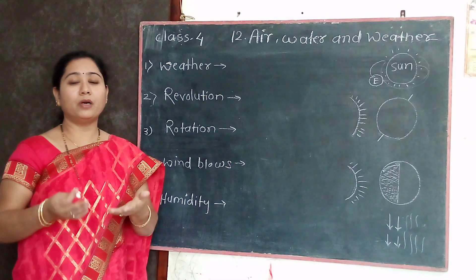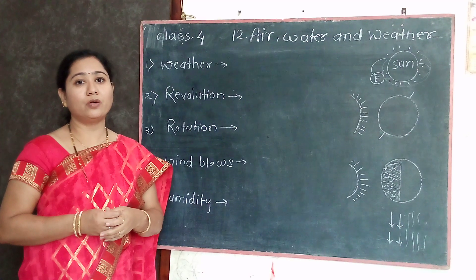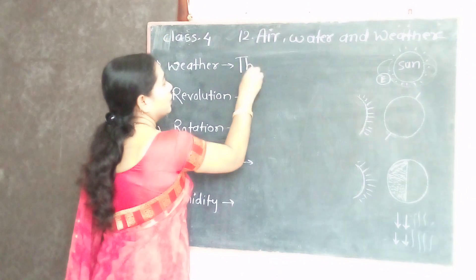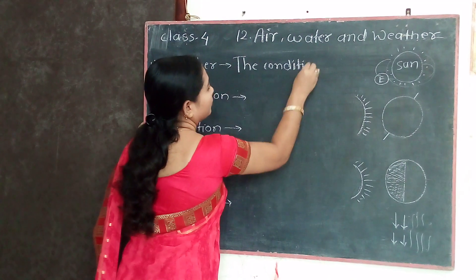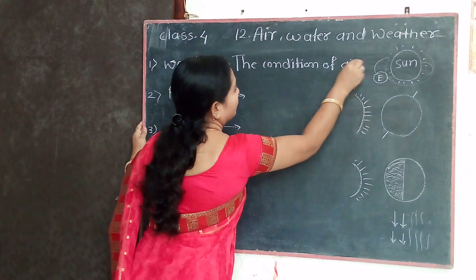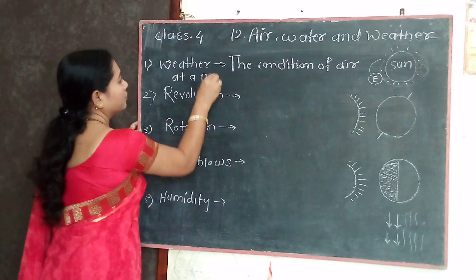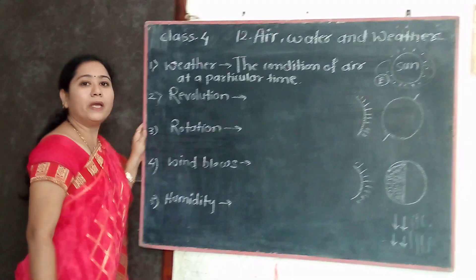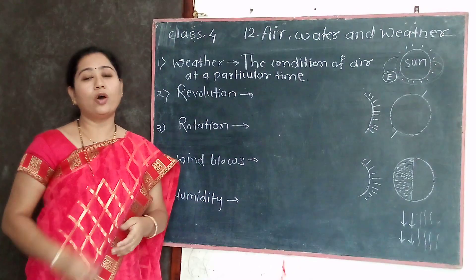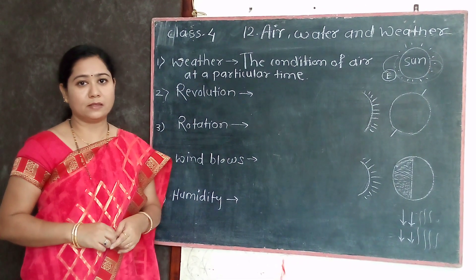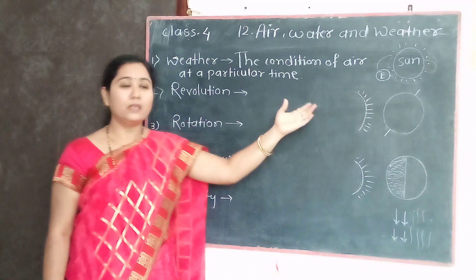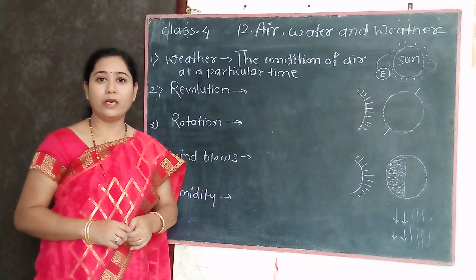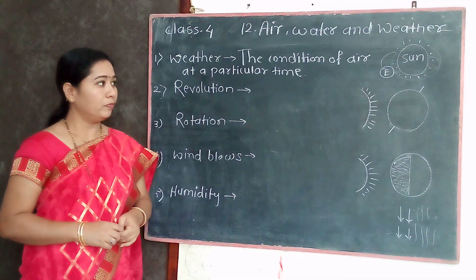Depending on the temperature of a particular place, the temperature of air also changes. Thus weather can be defined as the condition of air at a particular place and time, based on how cold or hot, dry or rainy, or calm or windy the place is.